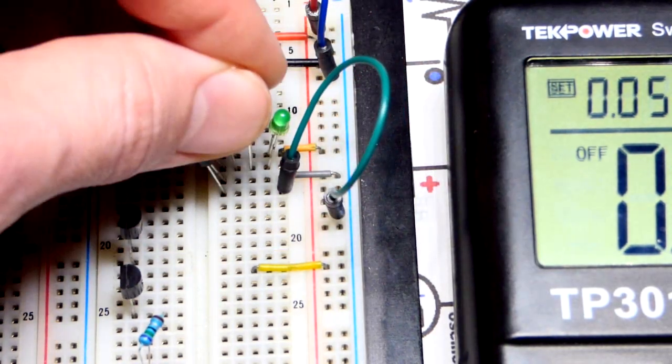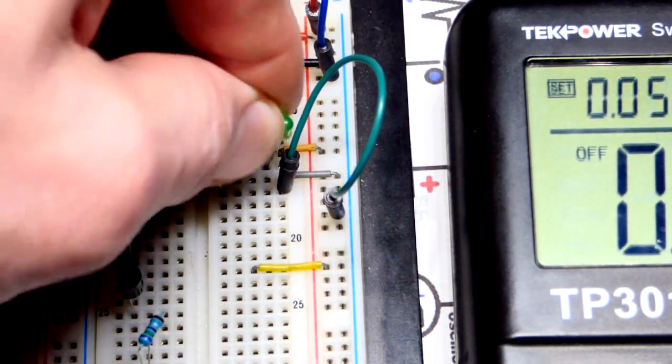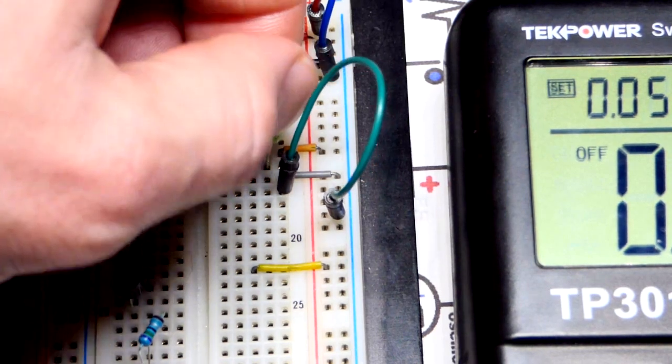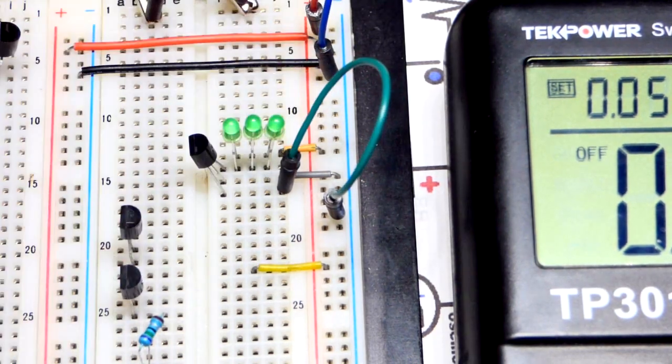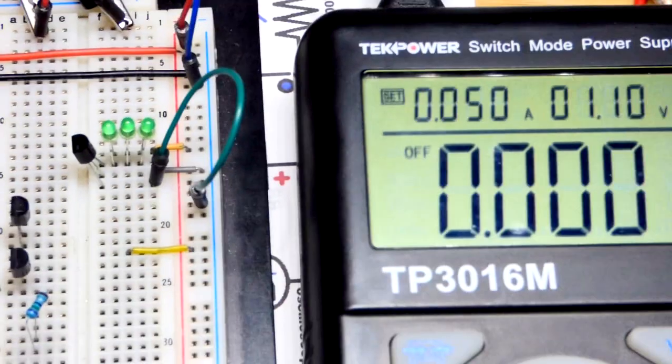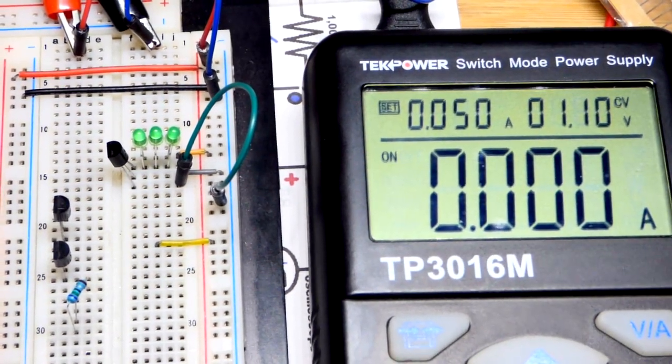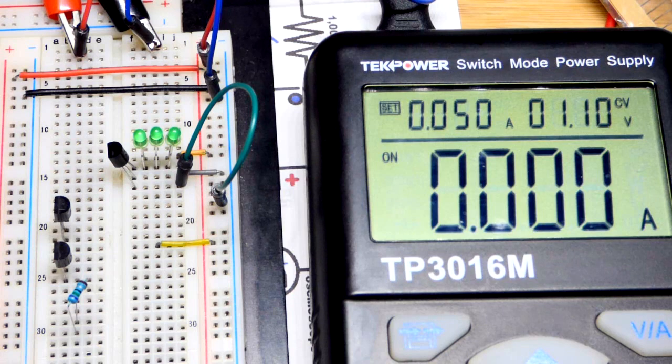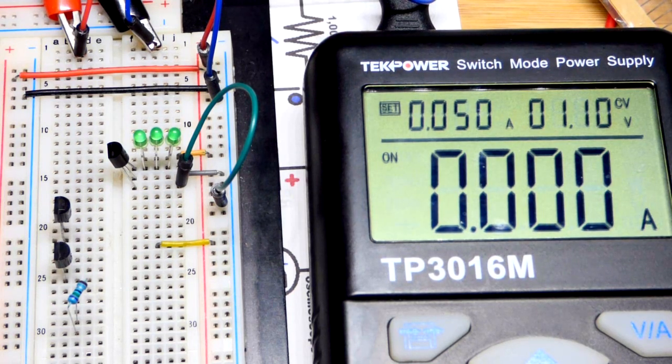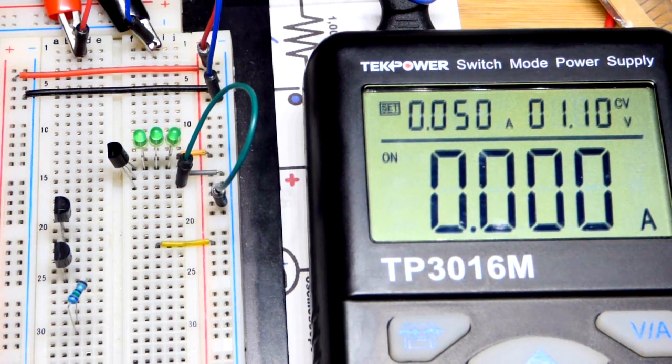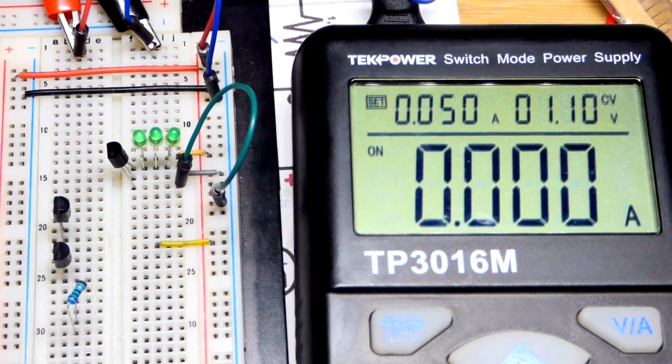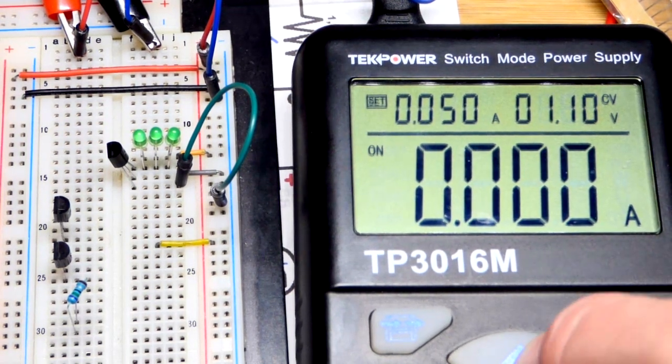So now we've got three of them in parallel. They will split the current, hopefully evenly. That's one thing about parallel semiconductors is the one that's actually blocking the least voltage will have the most current go through. So hopefully they're blocking exactly the same. But we have some safety margins.